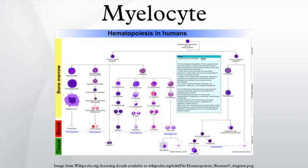A myelocyte is a young cell of the granulocytic series, occurring normally in bone marrow.